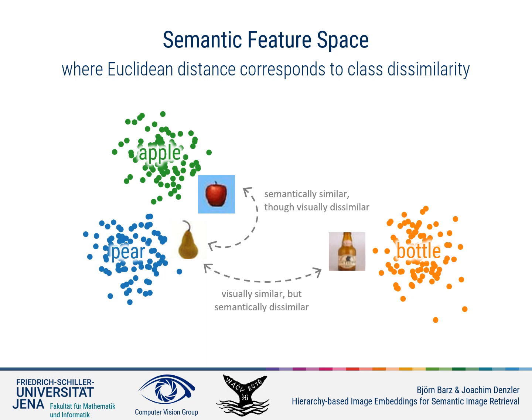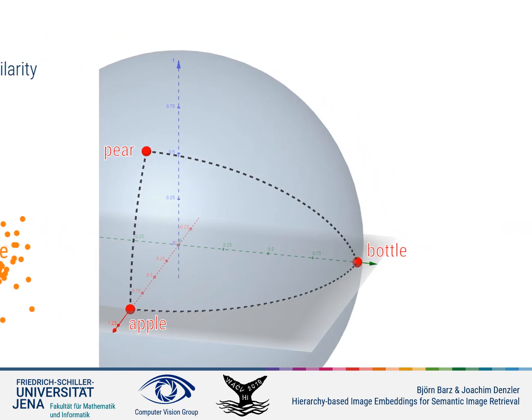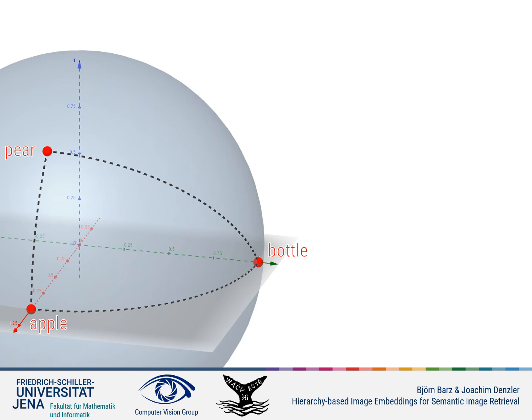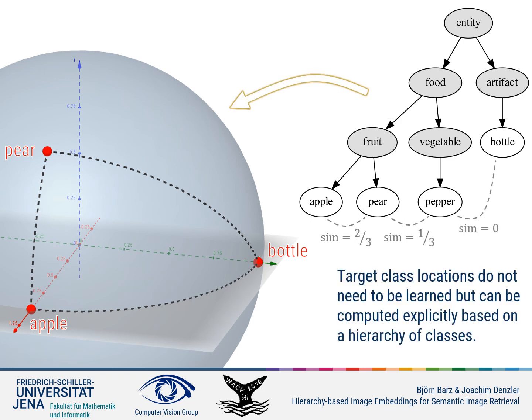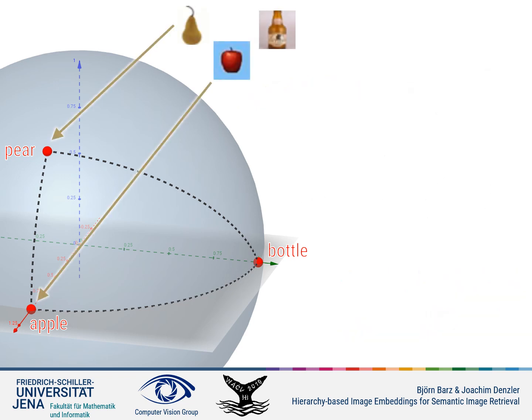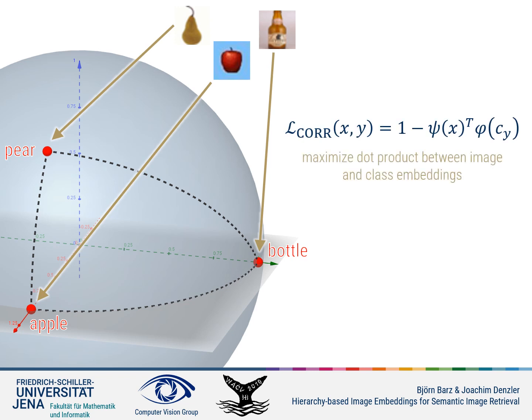Many works try to learn the semantic similarity between classes based on visual information, but fortunately we do not need to. Generations of researchers have already organized the entities of the world into taxonomies — hierarchies of classes — and we can use this prior semantic knowledge to determine their pairwise similarity. Given this, we can deterministically compute optimal locations for all classes on the unit hypersphere so that their dot product equals their semantic similarity. All that remains is to learn to map images onto these class centroids, employing a convolutional neural network trained with a simple loss function that maximizes the dot product between the class embeddings and the L2-normalized image features.